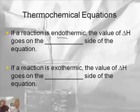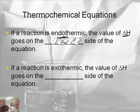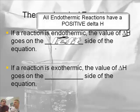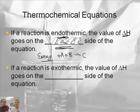Let's review. If a reaction is endothermic, the value of delta H goes on the left side of the equation, the reactant side. So if A plus B makes C, the energy would go on the left side for endothermic reactions.